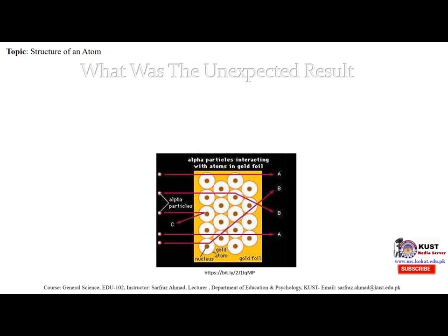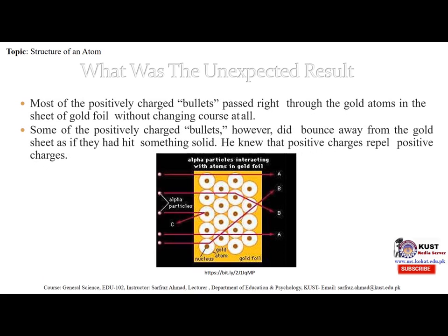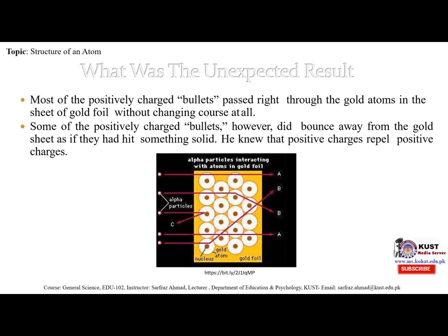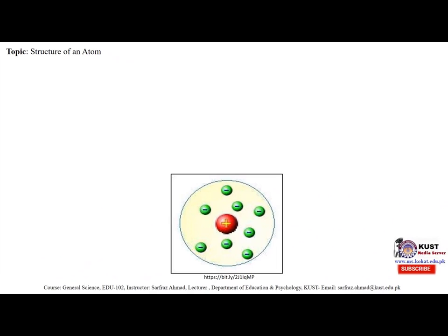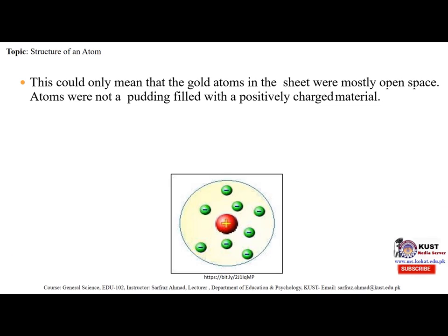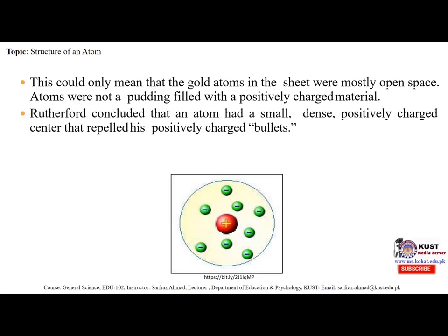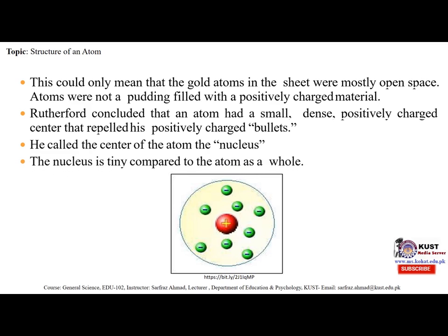The unexpected result was that most of the positively charged particles passed right through the gold atoms and the sheet of gold foil without changing course at all. However, some of the positively charged particles bounced away from the gold sheet as if they had hit something solid. Since Rutherford knew that positive charges repel positive charges, this could only mean that gold atoms were mostly open space — atoms were not a pudding filled with positively charged material. Rutherford concluded that an atom had a small, dense, positively charged center that repelled his positively charged particles. He called the center of the atom the nucleus. The nucleus is tiny compared to the atom as a whole.